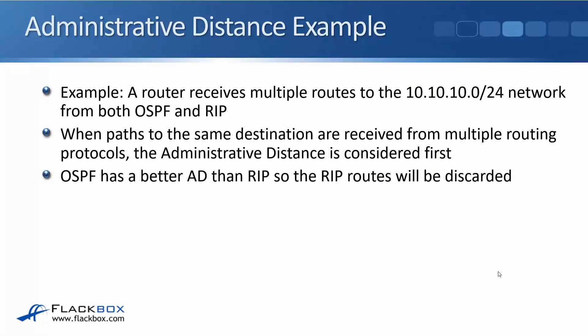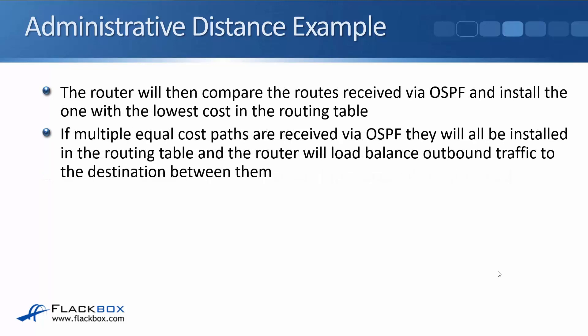Let's say we've got a router and it receives multiple routes to the 10.10.10.0/24 network from both OSPF and RIP. When paths to the same destination are received from multiple routing protocols, the administrative distance is considered first before the metric. OSPF has a better administrative distance than RIP, so the RIP routes are going to be discarded. Then the router will compare the routes received via OSPF and install the one with the lowest cost into the routing table. If multiple equal-cost paths are received, they'll all go into the routing table and the router will load balance between them.